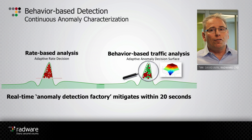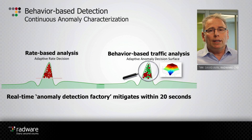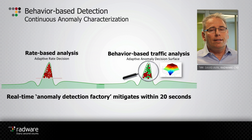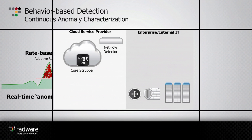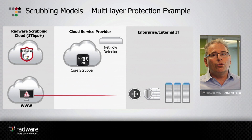This feeds and creates a new capability for the service provider — what we call an anomaly detection factory. That factory provides the service provider with information on anomalies on the network itself. Let's see how new scrubbing centers can be built.